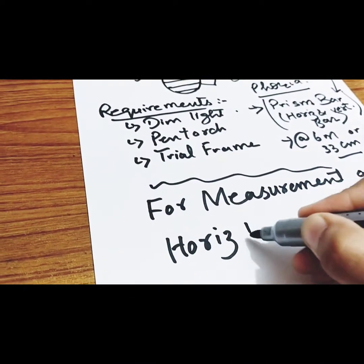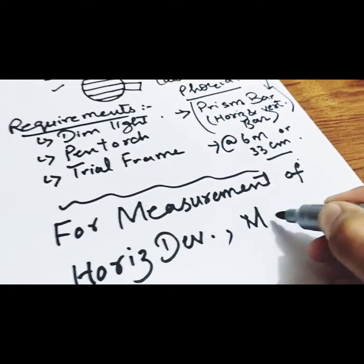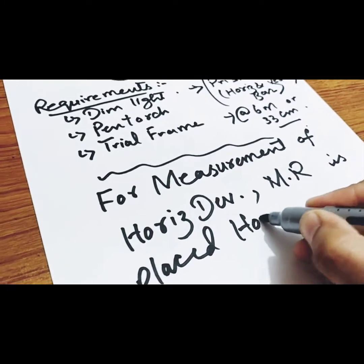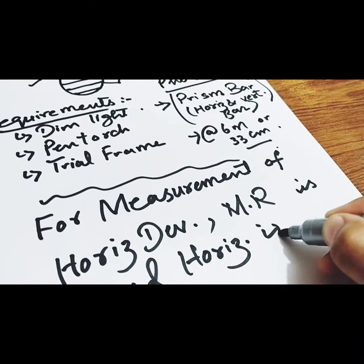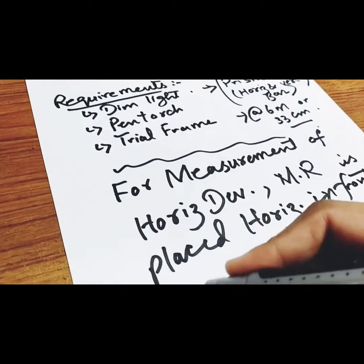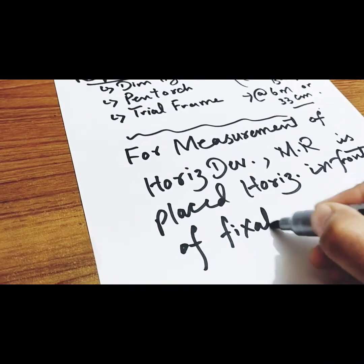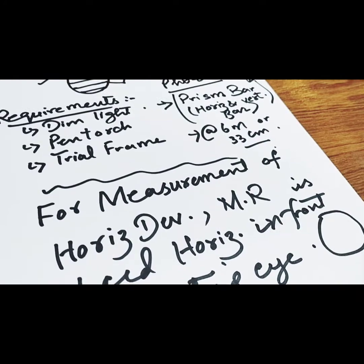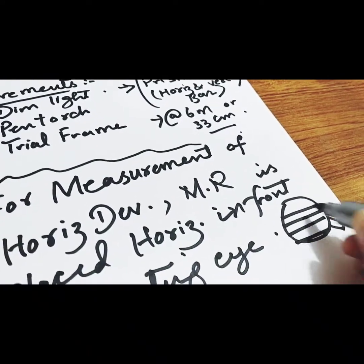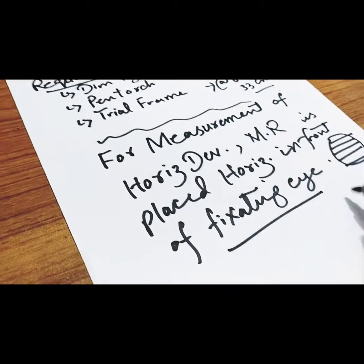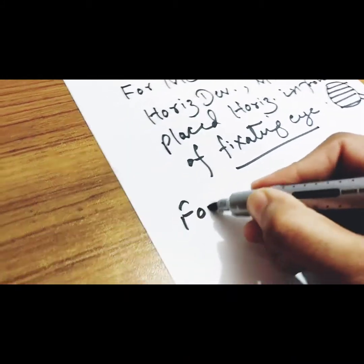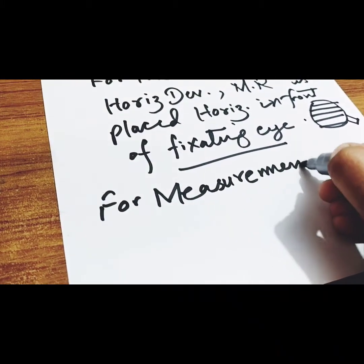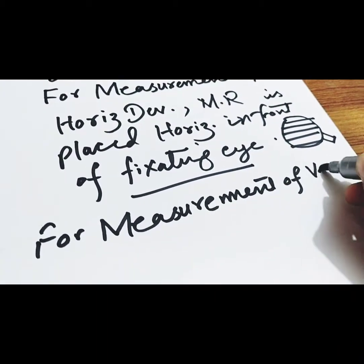For measurement of horizontal deviations, the Maddox rod is placed horizontally — that is, the axis of the Maddox rod is placed horizontally in front of the fixating eye. For measurement of vertical deviation, the axis of the Maddox rod is placed vertically.